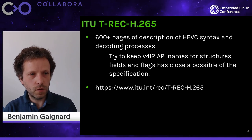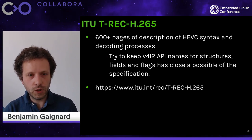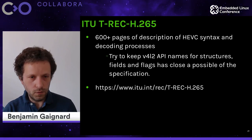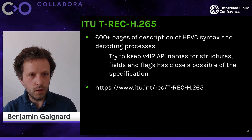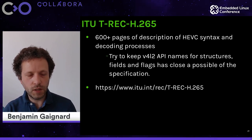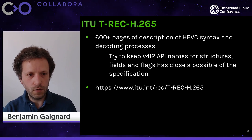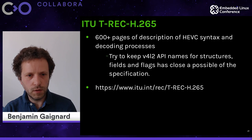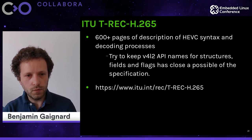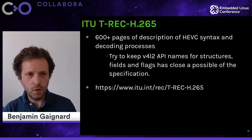The HEVC specification from ITU is more than 600 pages describing HEVC syntax and decoding processes. It's quite large, and everything is inside. The decoding processes are very well defined, so we try to keep the Video4Linux API names and structures as close as possible to the specification — in terms of naming, types, and structure content. This makes it easy to cross-reference the API with the ITU specification. There is also quite an effort in the documentation to indicate for each flag and each structure what chapter or reference in the specification it corresponds to.